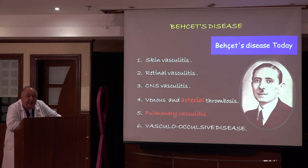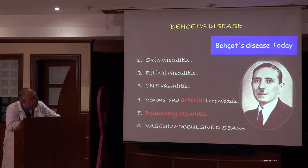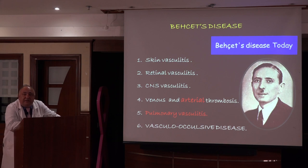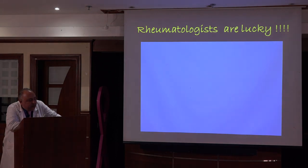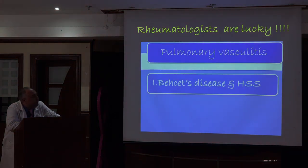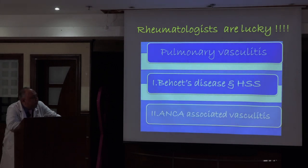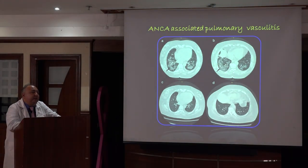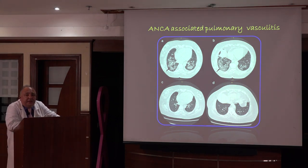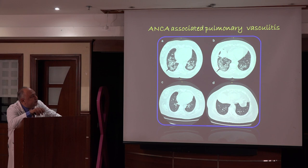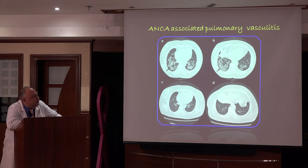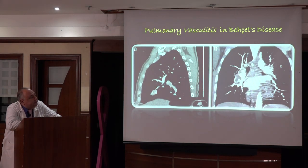Today we know more about Behçet's disease beyond the classic triad: it can affect the skin, cause retinal vasculitis, CNS vasculitis, venous and arterial thrombosis, pulmonary vasculitis, and vascular occlusive diseases including aortic and main branch aneurysmal formation. In rheumatology, pulmonary vasculitis has two main disease processes: Behçet's disease and Hughes-Stovin, and ANCA-associated vasculitis. For ANCA-associated vasculitis like Wegener's or Churg-Strauss, we see pulmonary infiltrates that improve after treatment with Cellcept within one month.